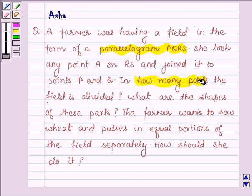In how many parts is the field divided? What are the shapes of these parts? The farmer wants to sow wheat and pulses in equal portions of the field separately. How should she do it?